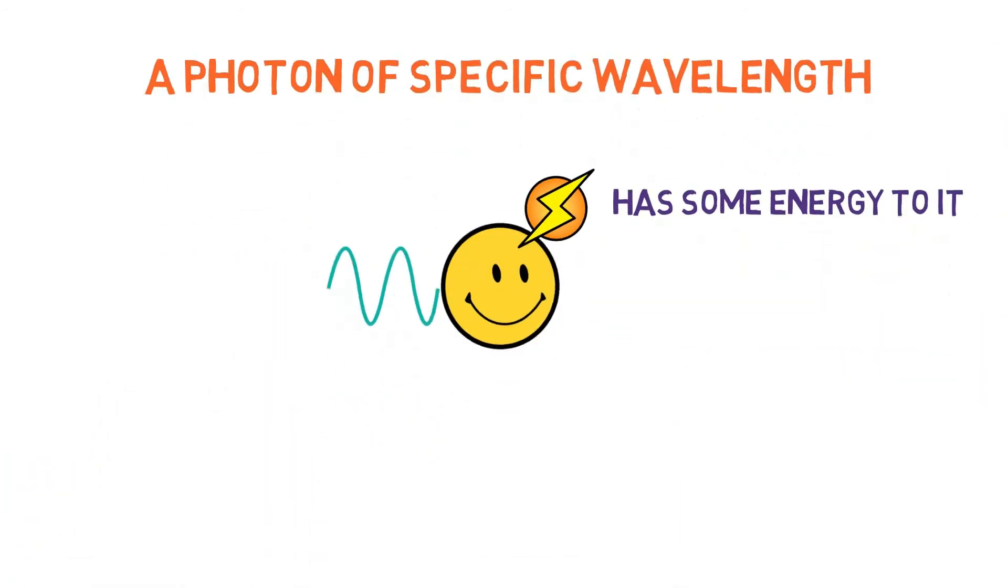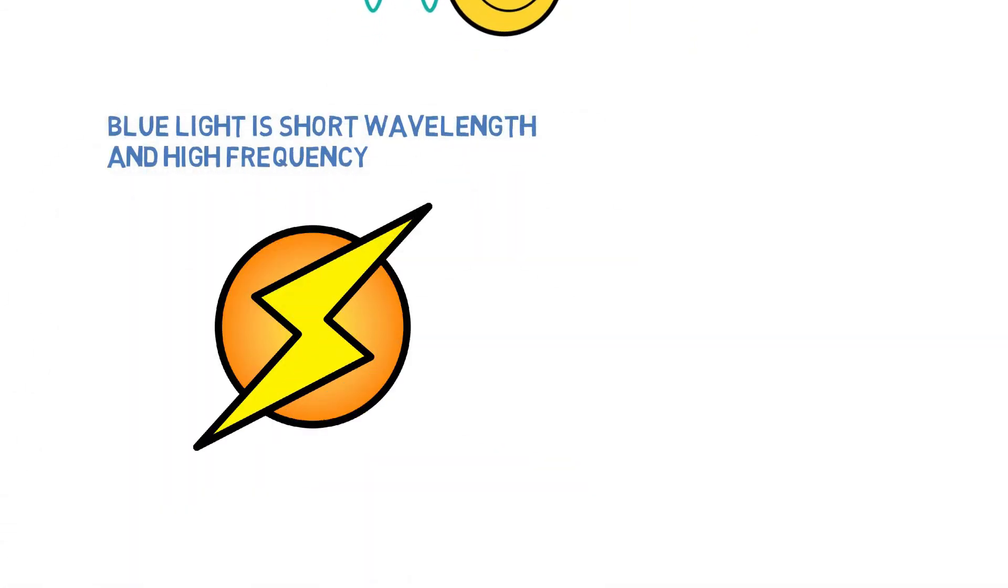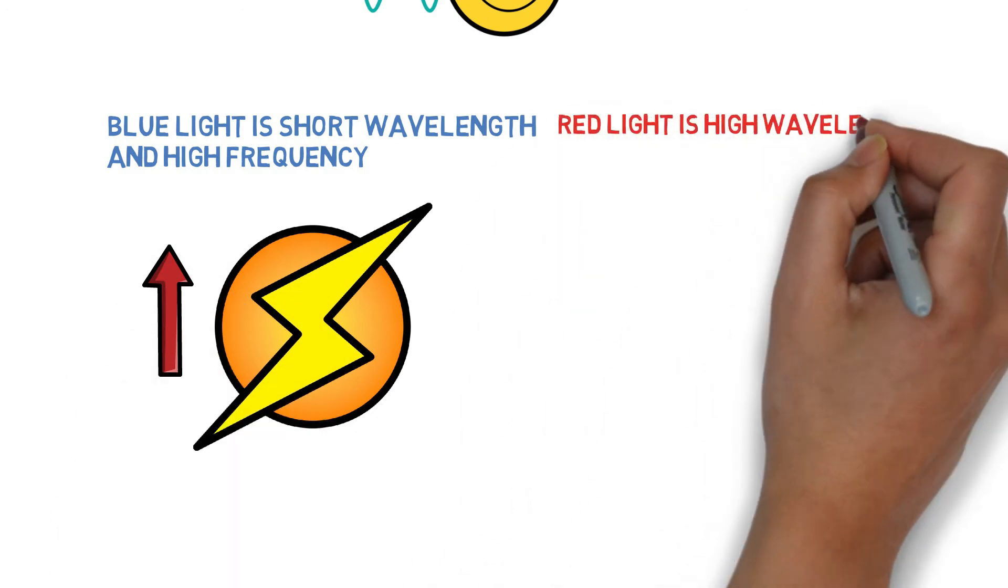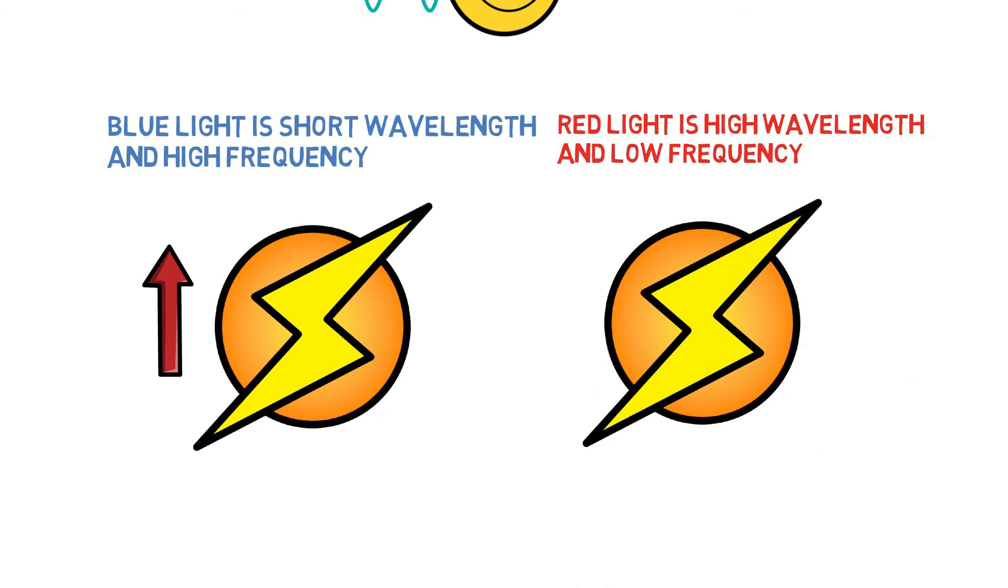Here the blue light, which is a shorter wavelength and higher frequency, has higher energy to it as compared to the red light that has high wavelength and lower frequency, which means it has lower energy to it.